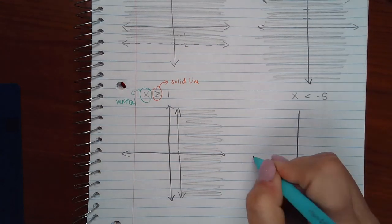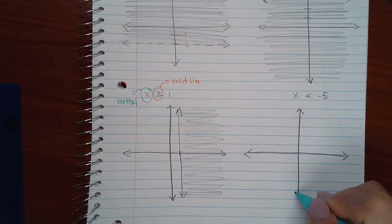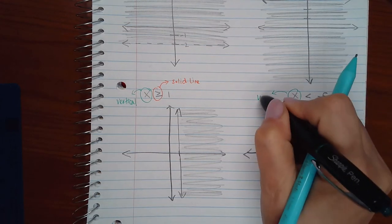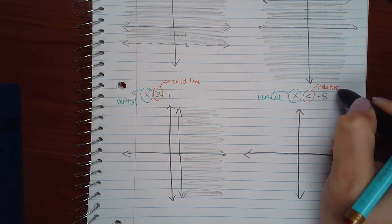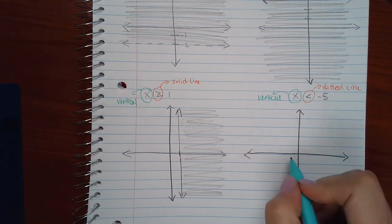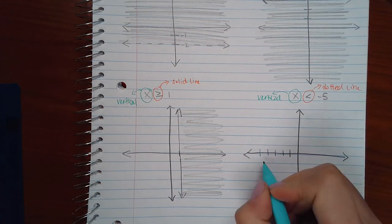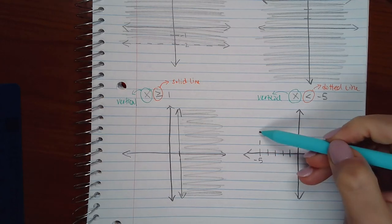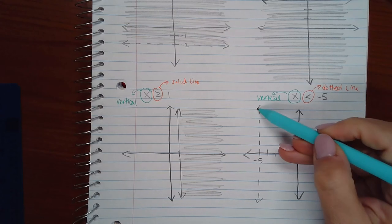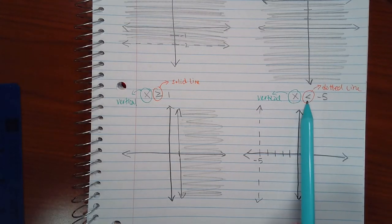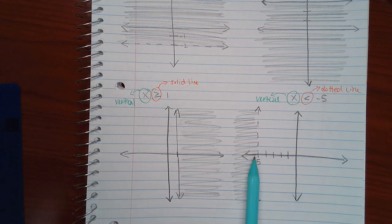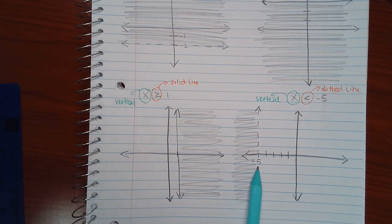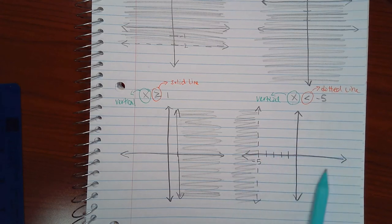The last example again has x only, so the line will be vertical. However, there is no equal bar, so I will have a dotted line. x = -5 is at negative 5, and I draw a dotted vertical line there. Now I shade everywhere x is less than negative 5, which means to the left of negative 5 — those x values would be smaller than negative 5, whereas the values to the right would be bigger than negative 5.